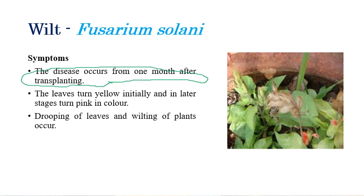The symptoms in Crossandra will appear exactly one month after planting. We can also see yellowing at initial stages; this yellowing later turns to pink in color, and in later stages, wilting and drooping of leaves can be clearly seen.